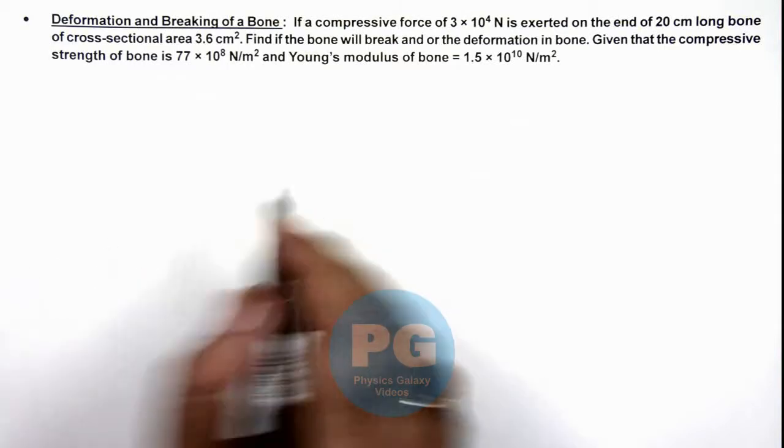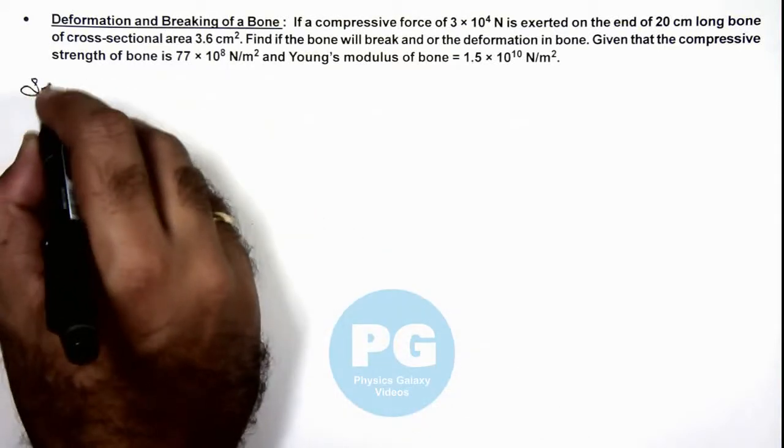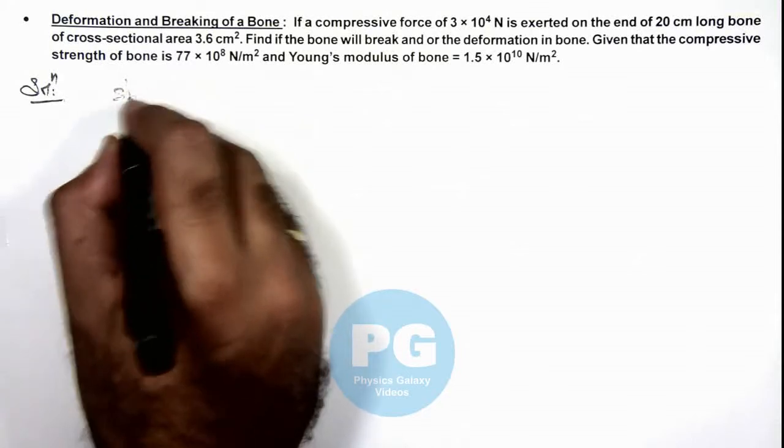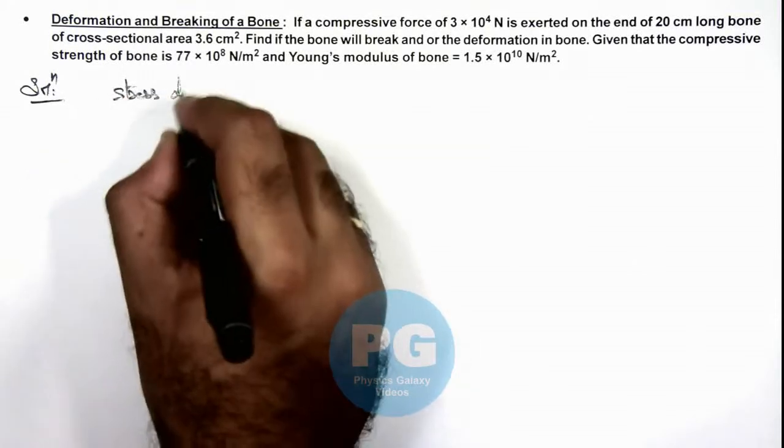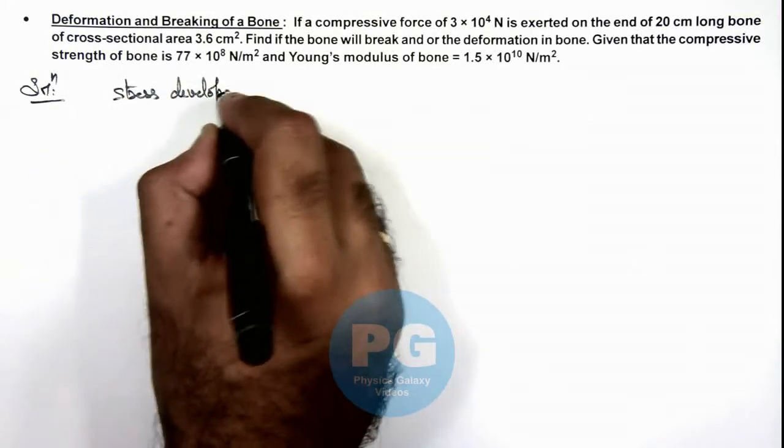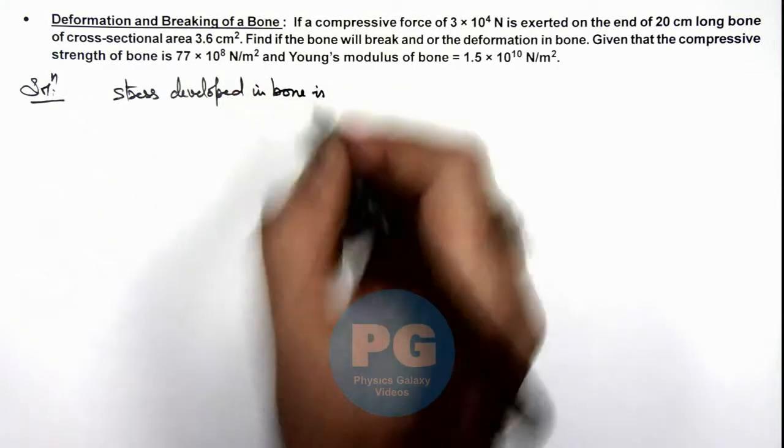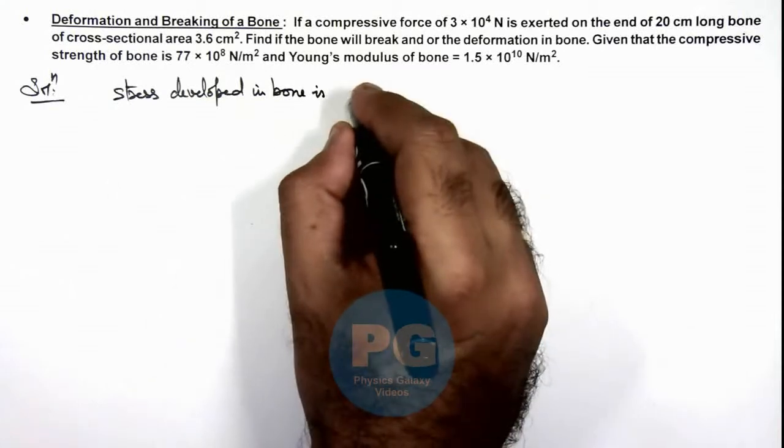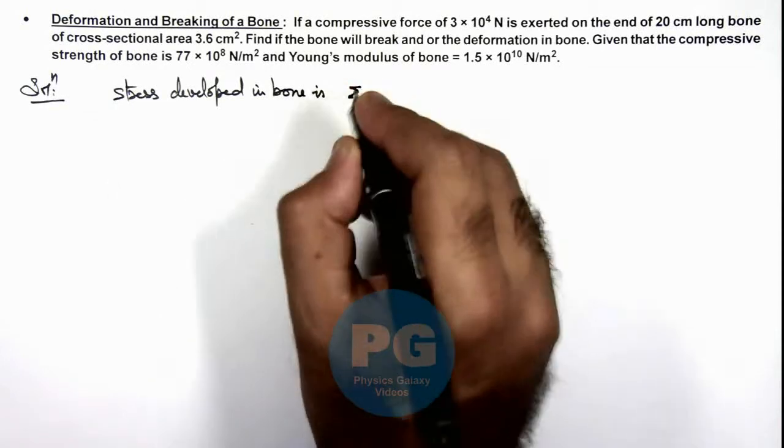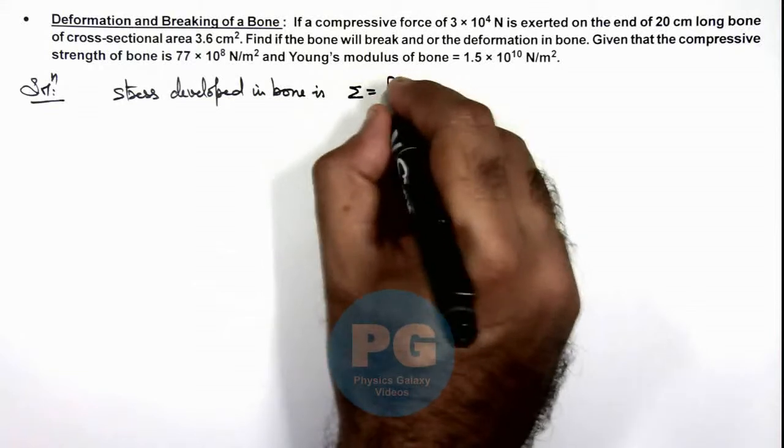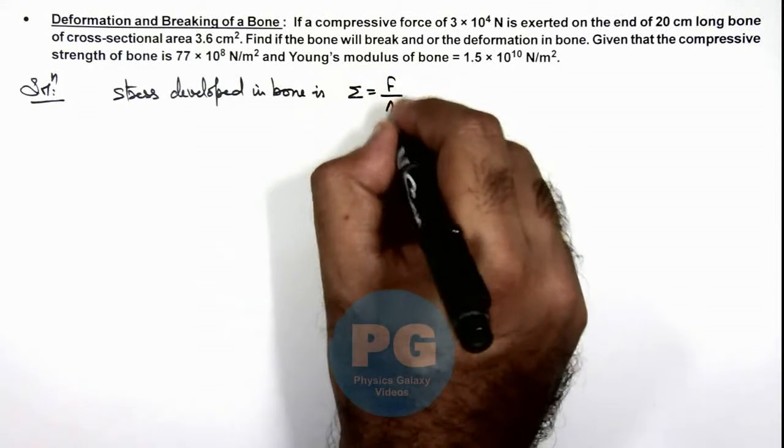In solution, we can first calculate the stress developed in bone. The value of stress we can write as sigma, which is equal to the applied force upon cross-sectional area.